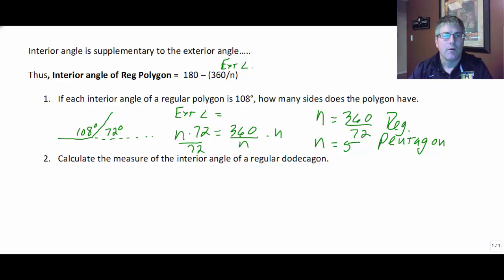And in our second sample problem, we want to calculate the measure of the interior angle of a regular dodecagon. So this is a question of have you memorized the names of the polygons. And this dodecagon has 12 sides or n equals 12. And the interior angle then must be the supplement to the exterior angle. So it's equal to 180 minus 360 over 12. So my interior angle is equal to 180 minus 360 divided by 12 is 30. So it is equal to 150 degrees. So the measure of the interior angle of a regular dodecagon is 150 degrees.